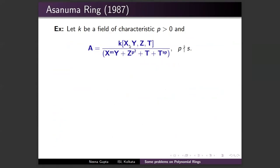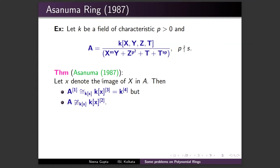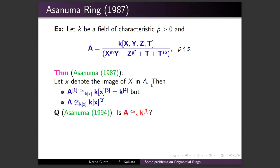Consider the ring A = k[X, Y, Z, T]/(Y^m · f − g), where k is a field of positive characteristic p. Professor Asanuma studied this ring and proved important results about it in 1987, in the context of the affine fibration problem. He showed that A is a stably polynomial ring — adjoining one more variable makes it a polynomial ring in four variables — however A is not a polynomial ring over the subring k[x].